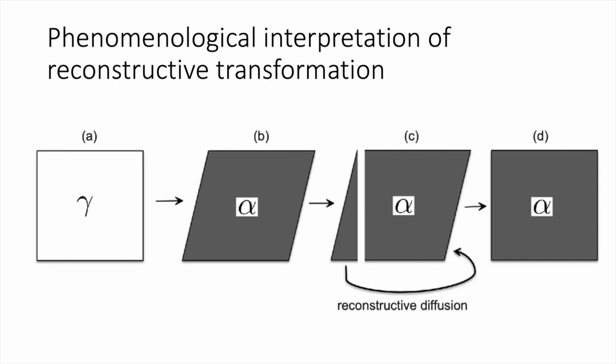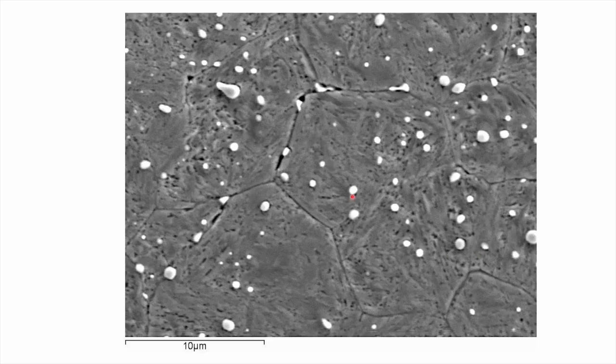Sometimes in order to get a good match between the atomic structure of the product and the parent, it might be advantageous to have a flat interface, in which case you get particles that look like plates — but there is no shape deformation associated with them.